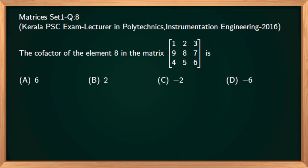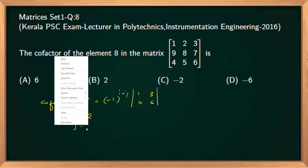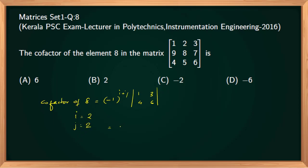Next question: find the cofactor of element 8 in the matrix [1,2,3; 9,8,7; 4,5,6]. The element 8 is at position i=2, j=2. The cofactor equals (−1)^(i+j) times the minor determinant, which is (−1)^4 times det[1,3; 4,6]. This equals +1 times (6 − 12) equal to −6. So the cofactor of 8 is −6, which is option D.